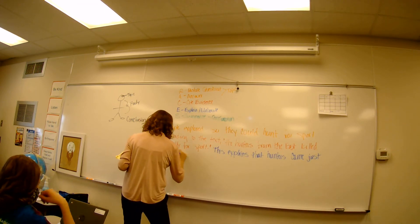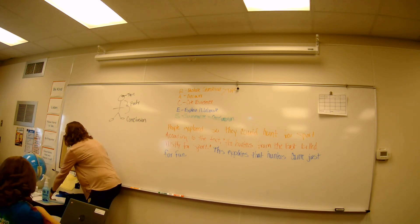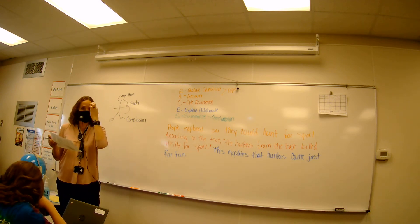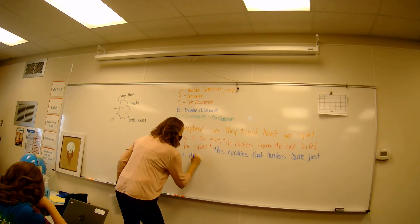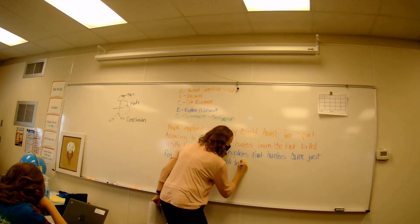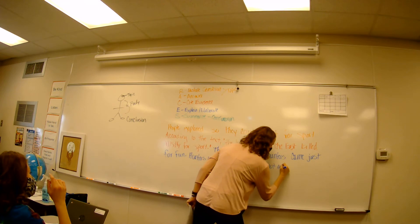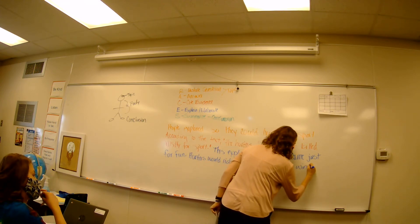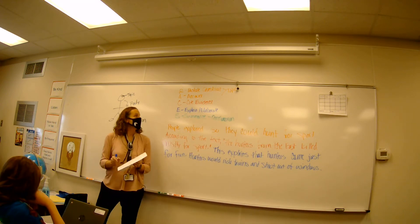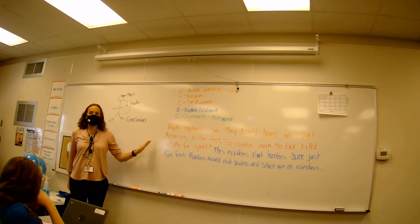Now we can expand on that. You can say, from our knowledge of this, what do we understand? We understand that they would do what? They would ride the train and then they would, okay. Hunters would ride trains and shoot out of windows. So hunters would ride trains and shoot out of windows. So now we've explained and we've elaborated, we've given more information. We've made it clear what this means.